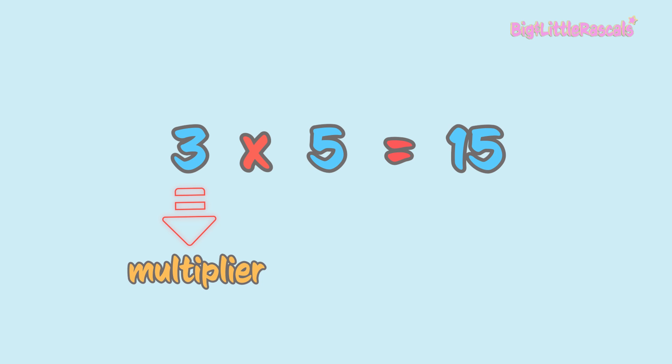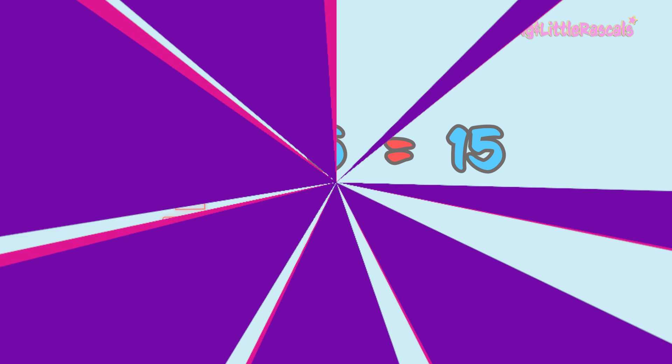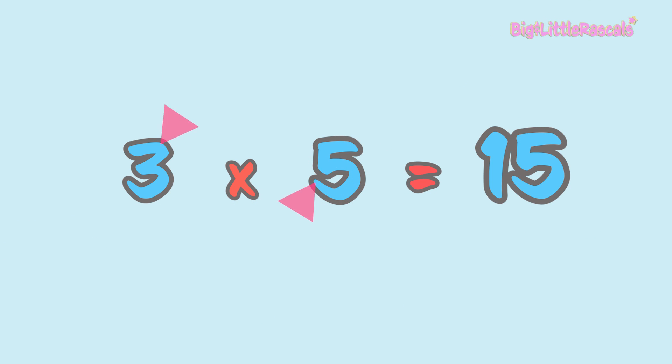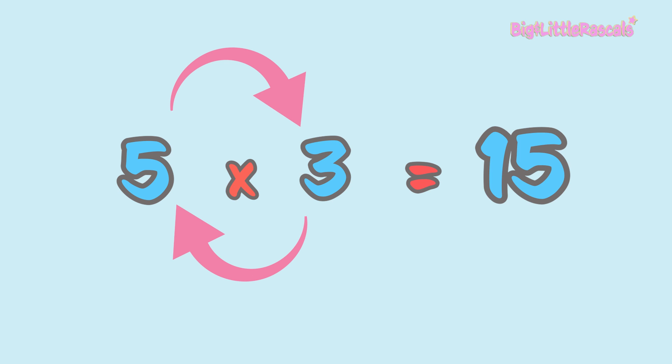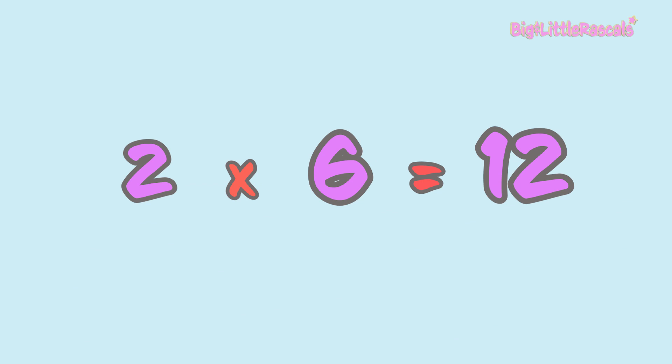So, we are multiplying a number with a multiplier to get the total result. In multiplication, if you swap the position of the two numbers, 3 times 5 to 5 times 3, it will still give you the same result of 15. Let's see another example.